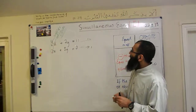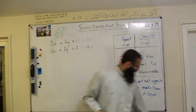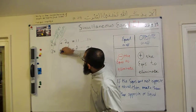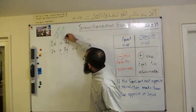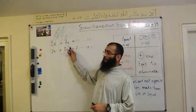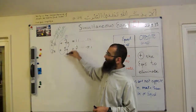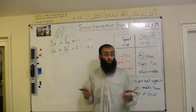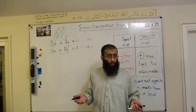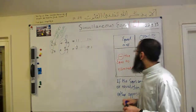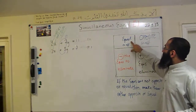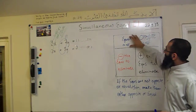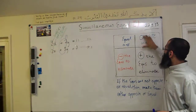Now, let's have a look at the coefficients of y for the sake of completeness. The coefficients of y — the numbers in front of y — we have plus 7 and plus 3. So these numbers are neither opposite nor equal; they're none of those two cases. And as we said before, the coefficients need to be equal or opposite. If they're equal, we minus the equations; and if they're opposite, we add.